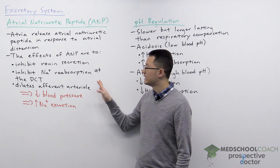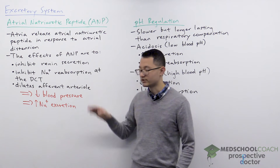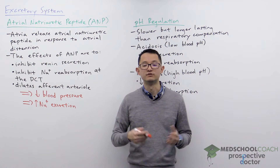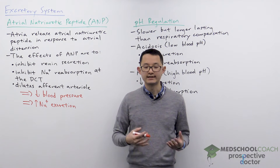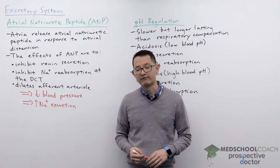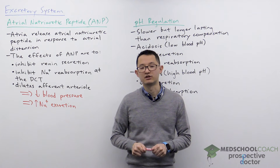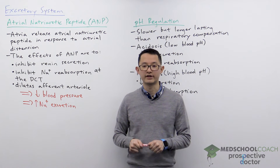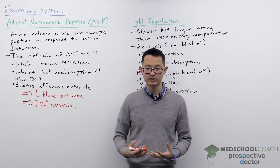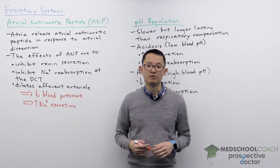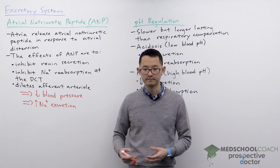ANP is also going to act on the afferent arterioles to dilate them. Dilation of the afferent arterioles is going to increase the hydrostatic pressure of the glomerular capillaries, resulting in more filtration, so more fluid is going to be produced as urine.